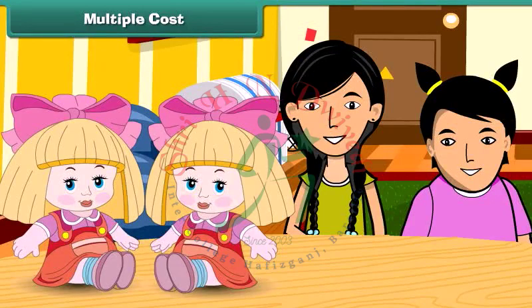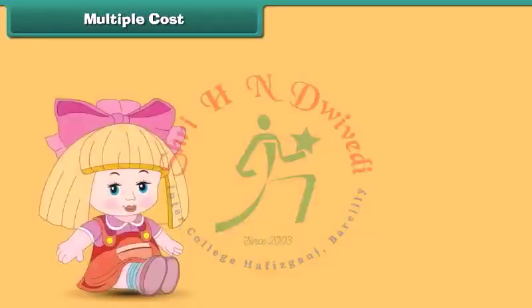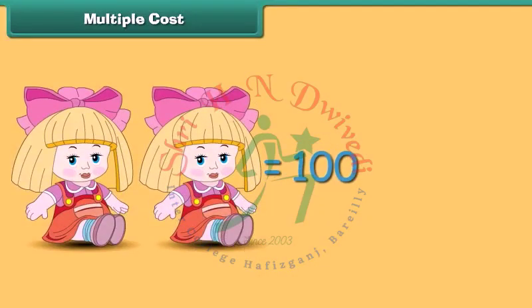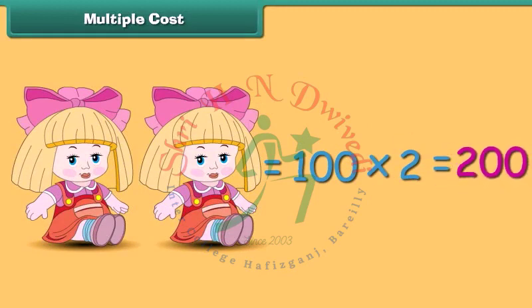Let us hear what these girls are talking. My mother bought these two dolls — one for me and one for my younger sister. The unit cost of a doll is 100 rupees. Unit cost is the cost of a single unit, so the cost of a single doll is rupees 100. The multiple cost of two dolls is equal to rupees 100 multiplied by 2, which is rupees 200. A multiple cost is the cost of more than one item and is calculated as unit cost multiplied by number of items.